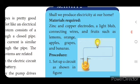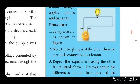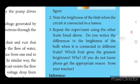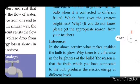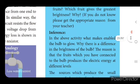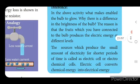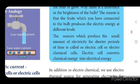Citrus fruits can generate electricity — you can use lemon, orange, apples, grapes, and bananas. Set up the circuit and note the brightness of the bulb when connected to your lemon. Repeat the experiment using other fruits. What we infer is that the fruits produce electric energy at different levels. Sources that produce a small amount of electricity for a shorter period of time are called electric cells or electrochemical cells.